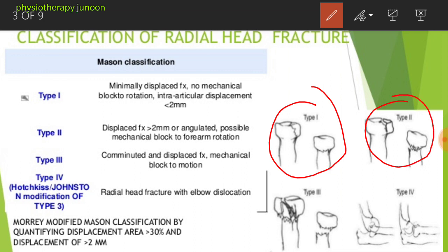Type 3 is a comminuted fracture of the entire radial head. Type 4 involves concomitant dislocation of the elbow or other associated injuries. According to the Mason classification, our treatment also differs stage by stage.